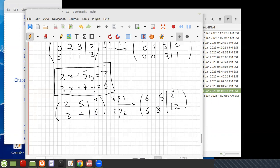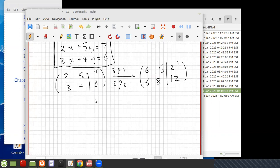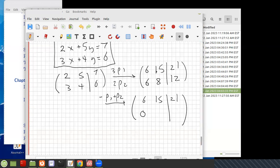the first one by 3. The reason was to set up this to have the same values, because then I can do minus row 1 plus row 2 to have 6, 15, 21, and 0. Minus 15 plus 8 is minus 7, I think. And then minus 21 and 12, maybe it's minus 9.